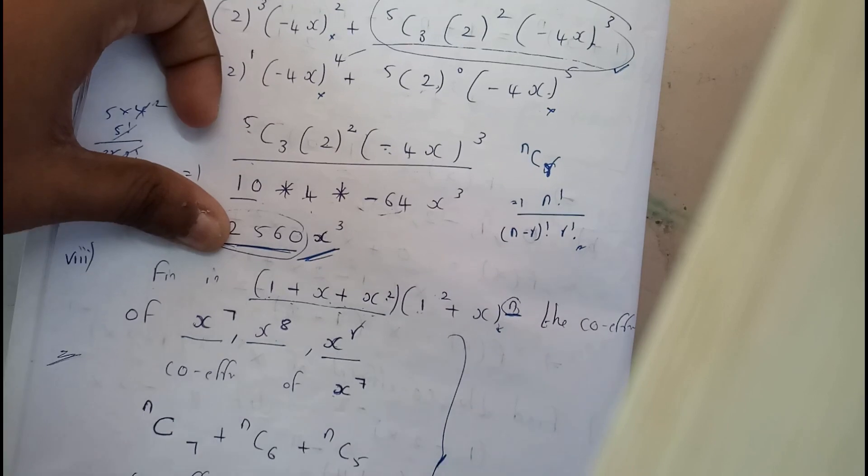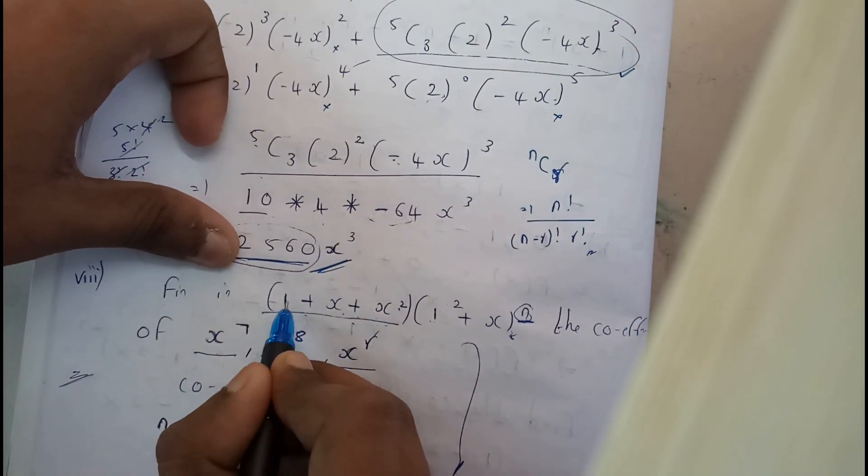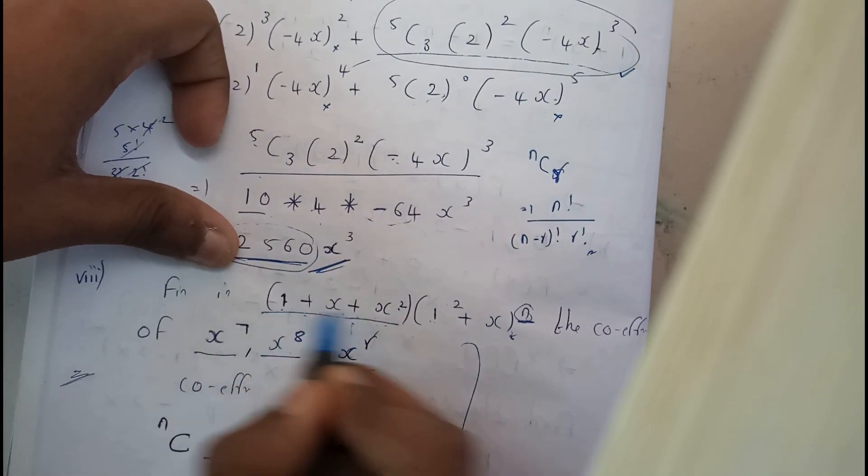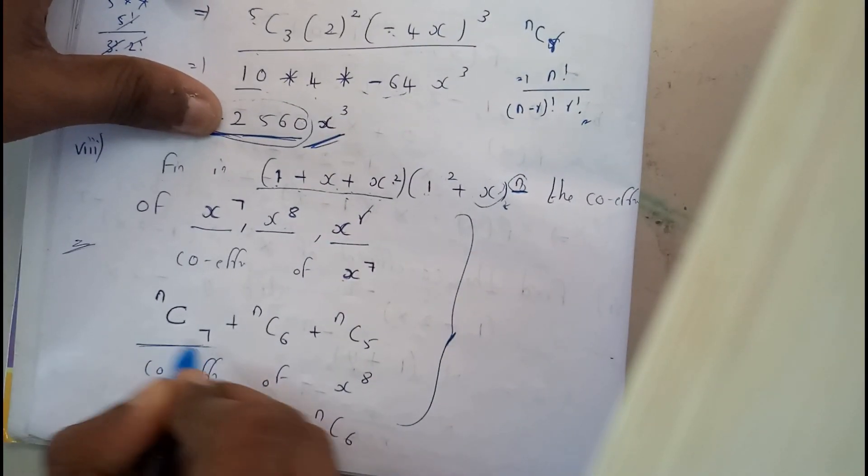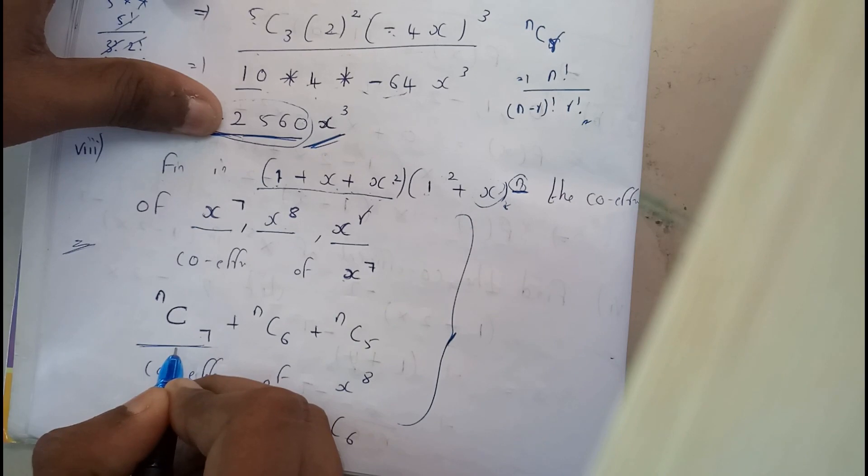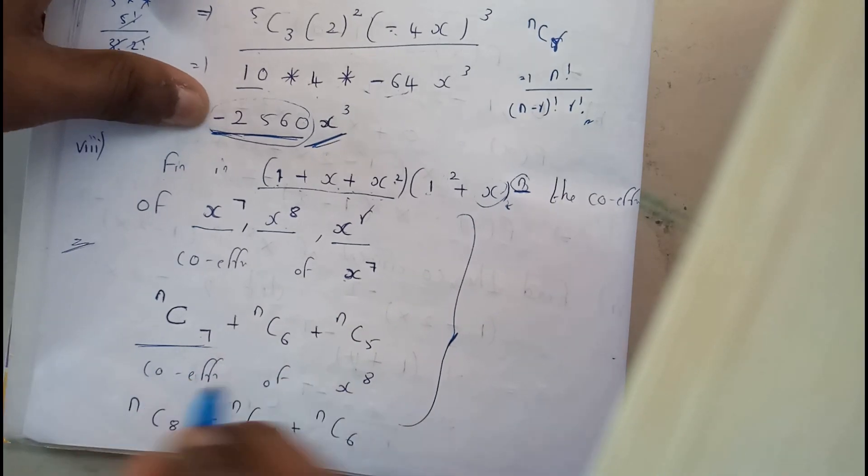So, let us check all the possible chances of getting x power 7. We can get by this term. If we have x power 7 in this, we can have a chance of getting NC7. I hope everyone got a small idea. Let me go through it again.